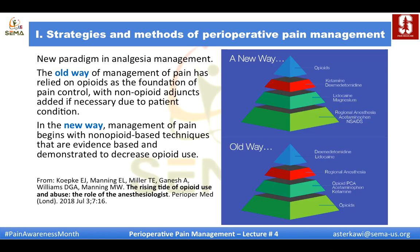The old thinking placed opioids as fundamental, with acetaminophen, ketamine, and regional anesthesia added later. Nowadays, this pyramid is reversed — opioid is at the tip and is the last resort. The fundamentals are regional anesthesia, acetaminophen and NSAIDs, then adjuvants like lidocaine, magnesium, ketamine, and dexmedetomidine. Lidocaine and ketamine work on the NMDA receptor and the hyperalgesia/sensitization pathway, with increasing evidence that lidocaine ameliorates hyperalgesia even if not a potent analgesic itself.